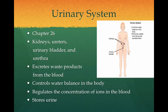The urinary system includes the kidneys, the ureters, the urinary bladder, and the urethra. It excretes waste products from the blood and controls water balance in the body by regulating how much urine is produced and excreted. It also regulates the concentration of ions in the blood such as sodium and potassium, and stores urine in the urinary bladder prior to urination. The urinary system will be studied in Chapter 26.